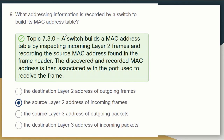Question nine: what addressing information is recorded by a switch to build its MAC address table? The switch records the source layer 2 address of incoming frames. Specifically, the switch builds a MAC address table by inspecting incoming Layer 2 frames and recording the source MAC address found in the frame header. That discovered MAC address is then associated with the port used to receive the frame.